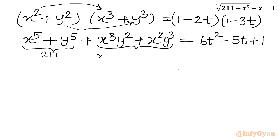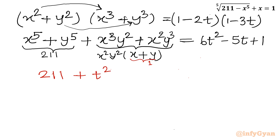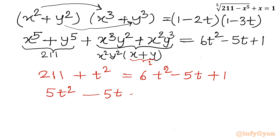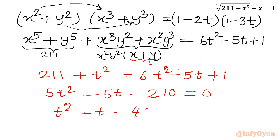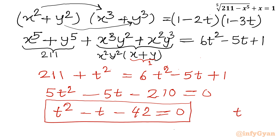Taking x^2·y^2 common from the cross product terms, in bracket we have x plus y. Putting all values: 211 plus t^2 times (x+y = 1) equals 6t^2 minus 5t plus 1 on the right-hand side. Taking all terms to the right-hand side gives 5t^2 minus 5t minus 210 equals 0. Dividing by 5: t^2 minus t minus 42 equals 0.